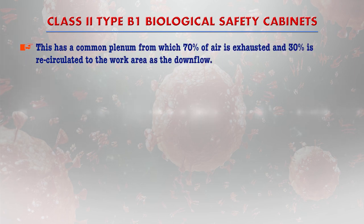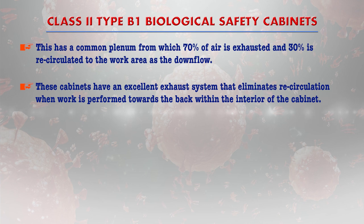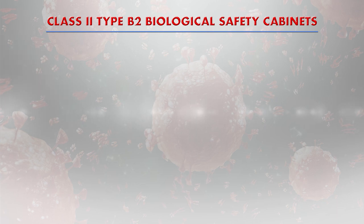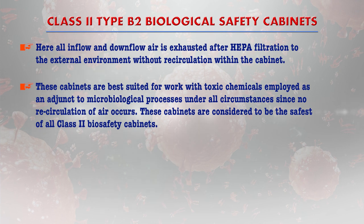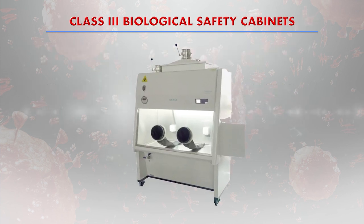The class 2 type B1 biosafety cabinet has a common plenum from which 70% of the air is exhausted and 30% is recirculated to the work area as downflow. These cabinets have an excellent exhaust system that eliminates recirculation when work is performed towards the back of the cabinet interior. In class 2 type B2 biosafety cabinets, all inflow and downflow air is exhausted after HEPA filtration to the external environment without any recirculation within the cabinet, making them best suited for work with toxic chemicals used alongside microbiological processes.